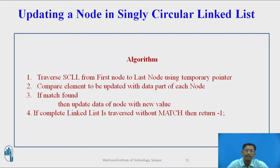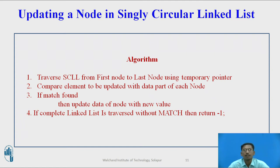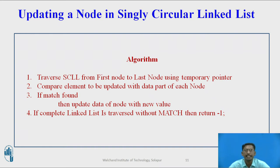The algorithm for updating a node in a singly circular linked list: traverse from first node to last node using a temporary pointer, similar to searching. Compare the element to be updated with the data part of each and every node while traversing. If a match is found, update the data part of that node directly. If no match is found after traversing the complete list, return -1.